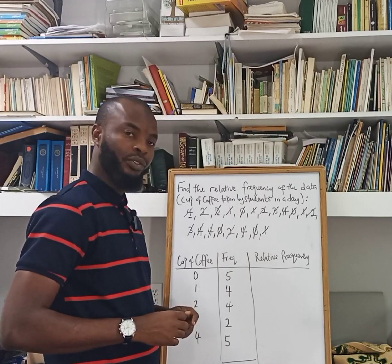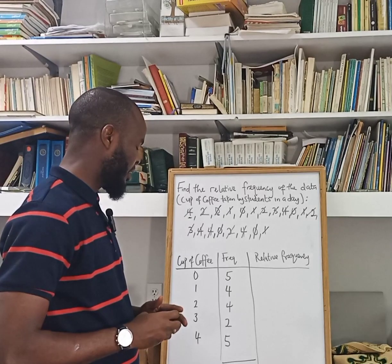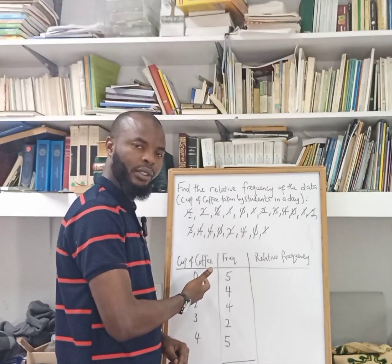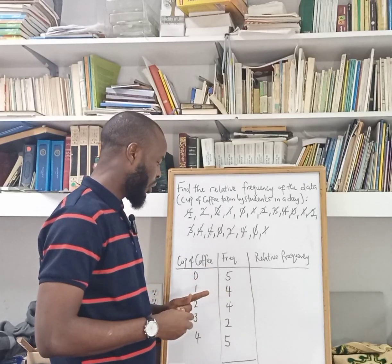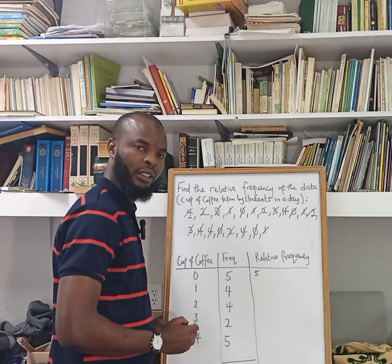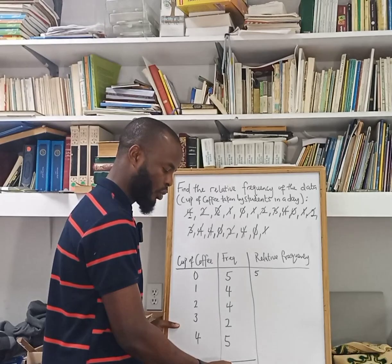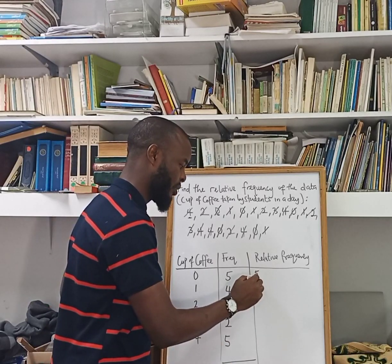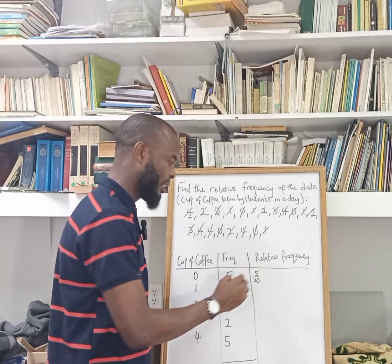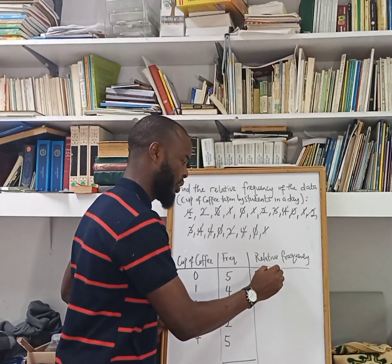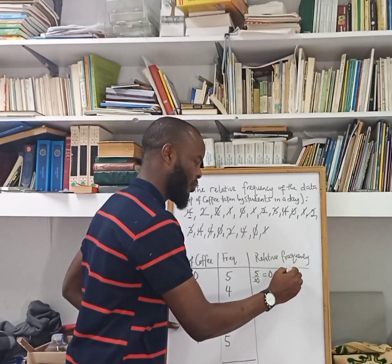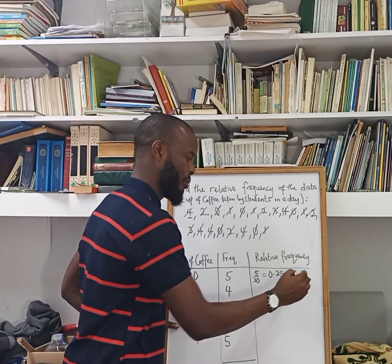Now let's calculate the relative frequency. The formula for calculating relative frequency is the frequency of each category over the total. For the first category, the frequency is five and the total is 20, so it is 5 over 20, which equals 0.25, or 25% in percentage.